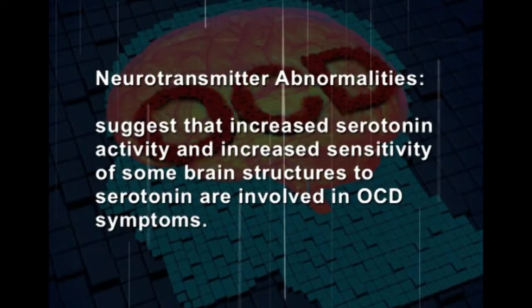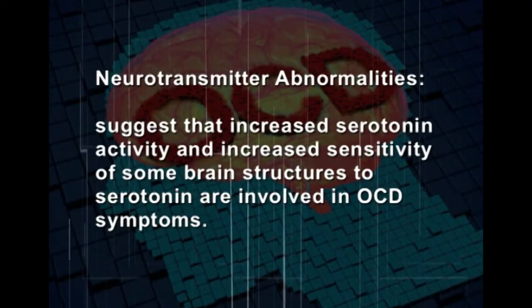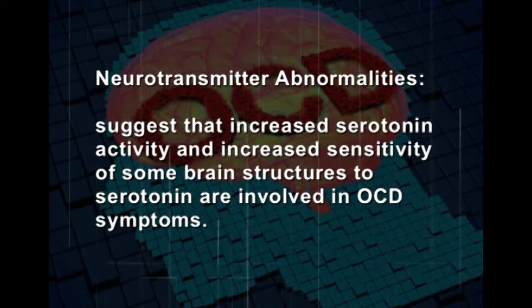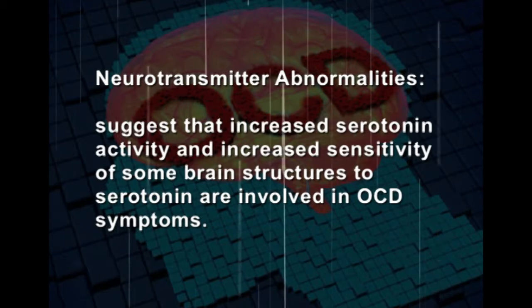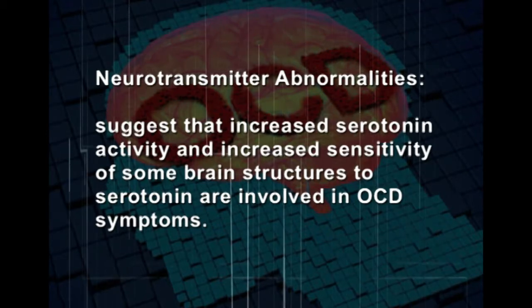Regarding the neurological basis of OCD, abnormalities in the basal ganglia and the amygdala, which control emotions and emotional behavior, can lead to OCD. Neurotransmitter abnormalities also suggest that increased serotonin activity and increased sensitivity of some brain structures to serotonin are involved in OCD symptoms.